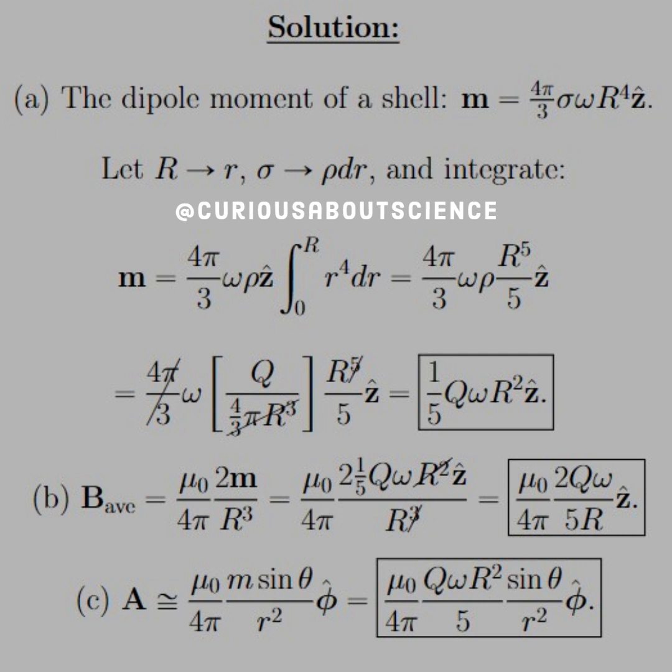We got our work cut out. Let's tackle it. The dipole moment of the shell, which was previously found, is M equal 4 pi over 3 sigma omega R to the fourth Z hat. We can see this geometrically speaking.